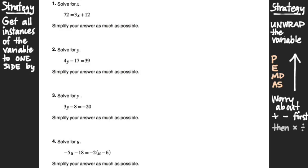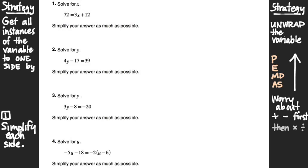Our priority is going to be to try and get all instances of u onto one side of the equation. We first have to deal with the parentheses problem. We'll simplify each side of the equation completely. That's the first step in our general strategy: if there's any unsimplified algebra, we should worry about that first and try to simplify completely.